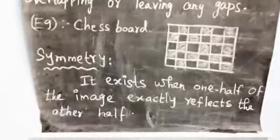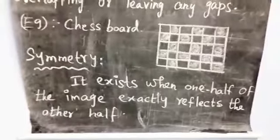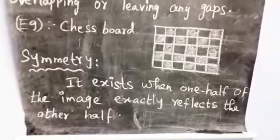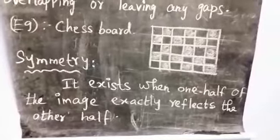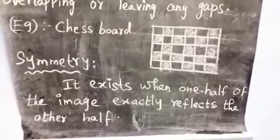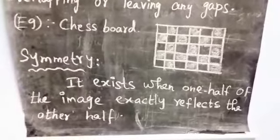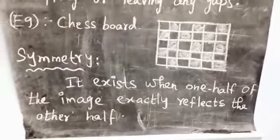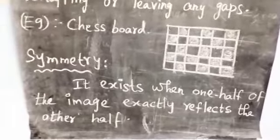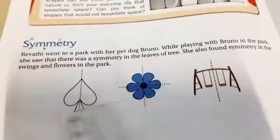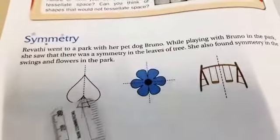Symmetry. Symmetry means when one half of the image exactly reflects the other half. One half of the image exactly reflects the other half of the image — that is symmetry.